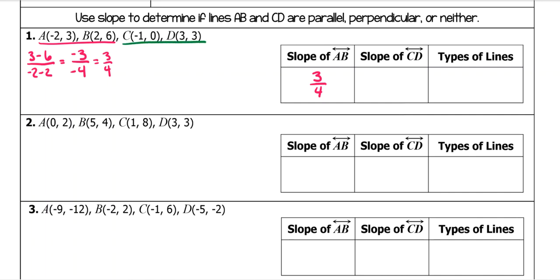For CD, subtract our y's on top: zero minus three. Subtract our x's on bottom: negative one minus three. Zero minus three is negative three, negative one minus three is negative four. A negative over a negative makes it positive three-fourths. These are the same slope, so they are parallel.